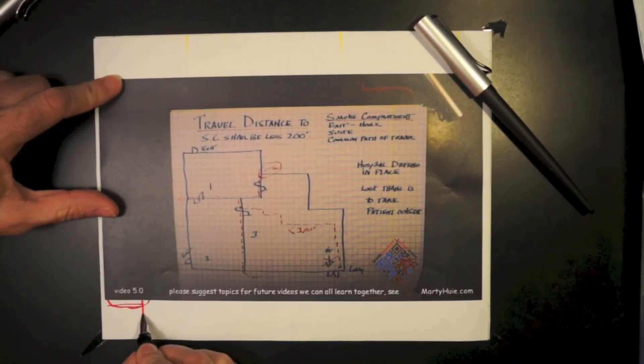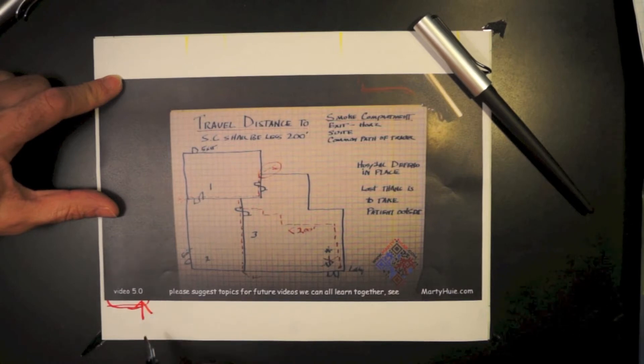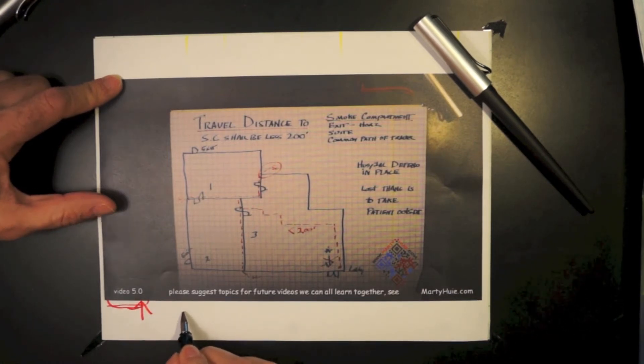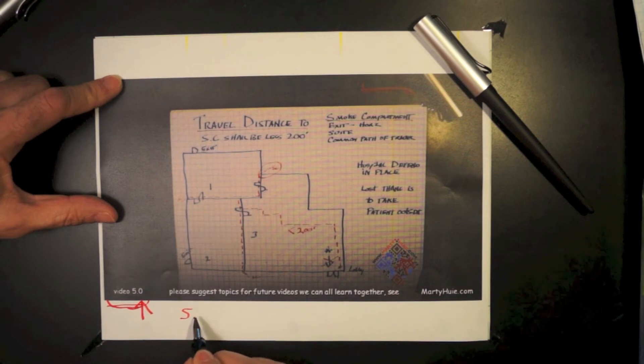So if you'll notice down in the bottom left-hand corner where the number of video you have here 5.0, that means it's the fifth video, zero revisions.